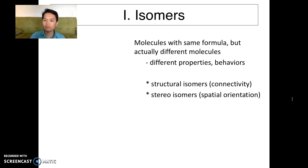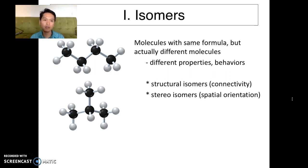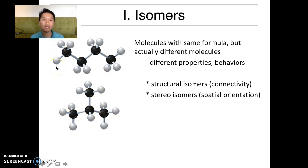Let's talk about structural isomers with an example: two alkanes. First, count how many carbon atoms and how many hydrogen atoms are in these two molecules — we need to do that to know whether they have the same molecular formula. In the top molecule we have four carbons, and in the bottom molecule also four carbons. The top has 10 hydrogens and the bottom also has 10. So they have the same molecular formula.